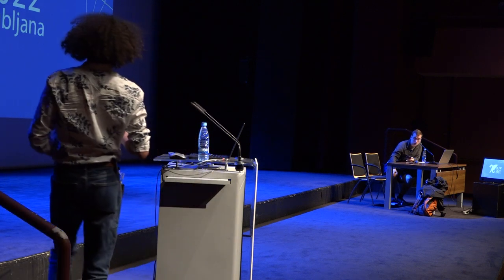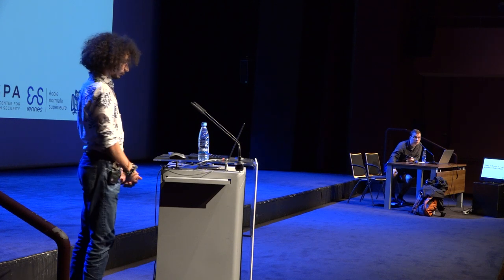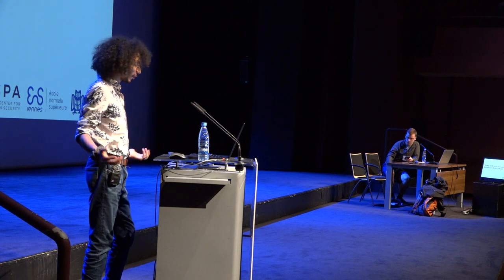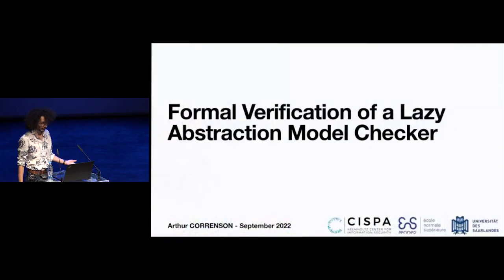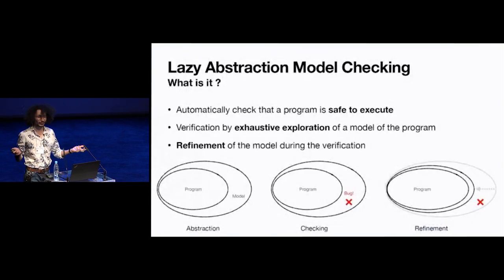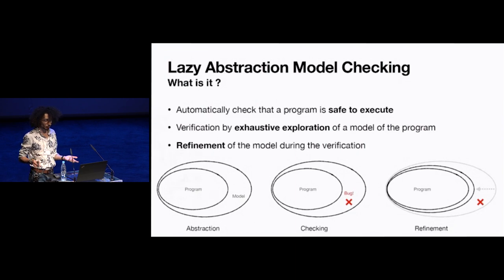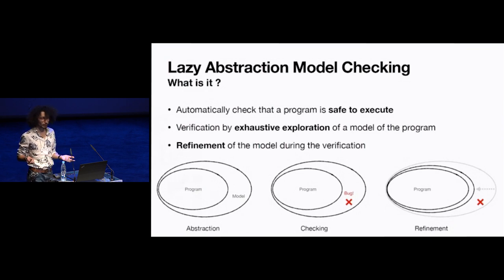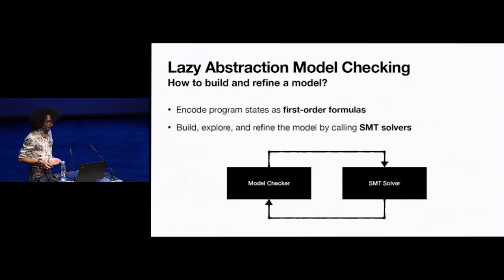The final speaker is Arthur Korensen, talking about formal verification of a lazy abstraction model checker. Hi everybody. My name is Arthur and I'm going to present my work on the formal verification of a lazy abstraction model checker. What is a lazy abstraction model checker? It's a methodology to automatically check that a program is safe to execute, and we do this verification by exhaustively exploring an abstract model of the program. Such a model is hopefully much smaller and therefore much easier to verify. What makes lazy abstraction model checking special is that we can refine the model during verification itself to make it more precise and conclude. To build and refine a model of a program, we encode program states as first-order formulas and then build, explore, and refine this model by calling SMT solvers.